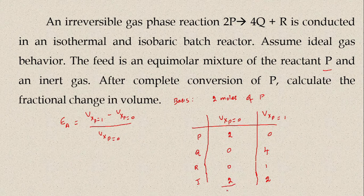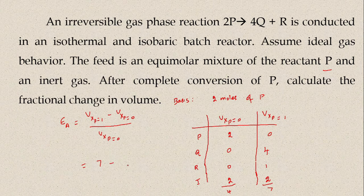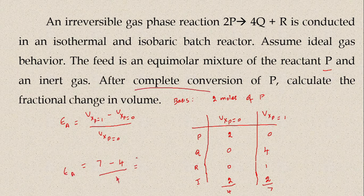Therefore, the number of moles of R at complete conversion will be 1. Summing all species at complete conversion: 0 + 4 + 1 + 2 = 7. At Xp = 0, the total is 2 + 0 + 0 + 2 = 4. Substituting into the fractional change in volume formula: epsilon A = (7 - 4) / 4 = 3/4 = 0.75.